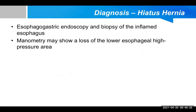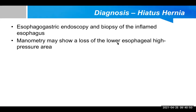Important tests include barium swallow study and fluoroscopy rather than endoscopy alone. Manometry — pressure measurement — can also be taken at the lower esophageal sphincter site. Manometry may show a loss of the lower esophageal high pressure area, meaning pressure is reduced there. The sphincter is relaxed, which is why there is a high chance of herniation upward.